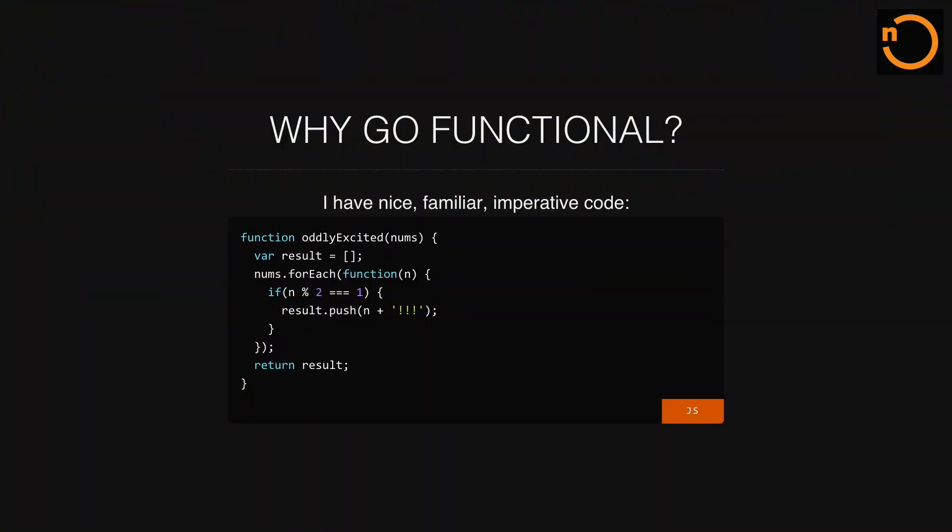One question that a lot of people ask is: why should we go functional? I have a very nice, familiar imperative code. This function basically checks for odd numbers — it creates a results array, iterates over all the parameters, does a forEach, and for every number checks if it's odd. If it's odd, it adds it to the results object with some exclamation marks and then returns the result. We are mutating this result array. So why should we actually go functional?